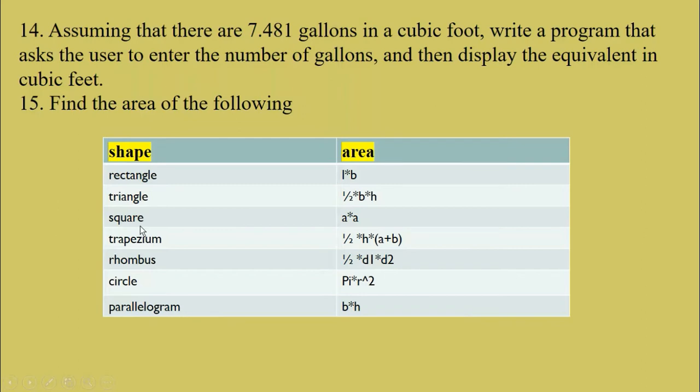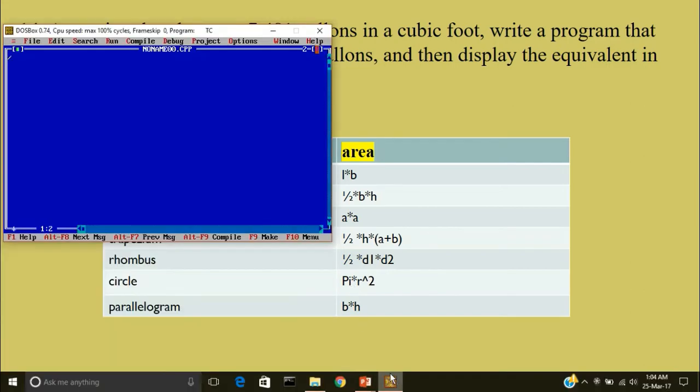Now to find the area of a square you can do this by your own. Trapezium is also easy. Rhombus is also easy. Now circle. In this we'll learn a new concept. Find the area of circle. Now include the header file. Hash include iostream.h, hash include conio.h. Then void main. Clear screen.